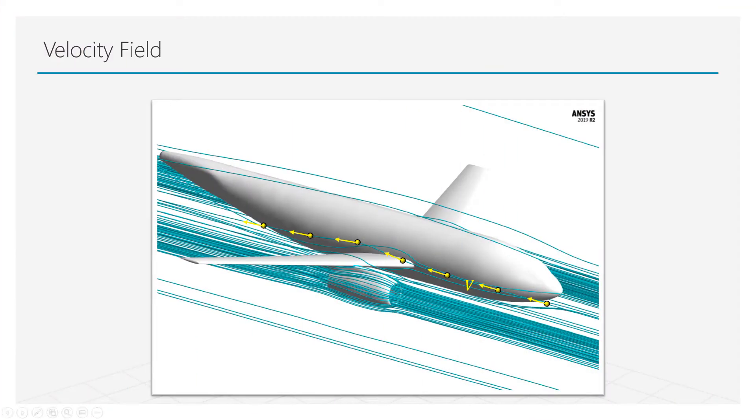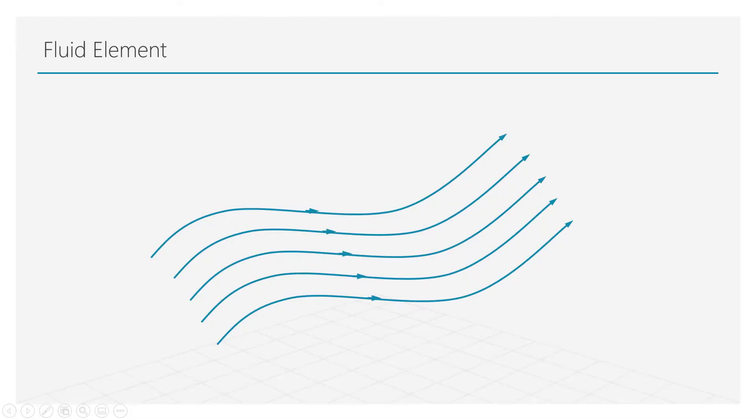Let us first start with the velocity field. Fluid velocity is a vector quantity which means it has both magnitude as well as direction. It can be described in the form of three components in the Cartesian coordinates. Fluid velocity can be a function of both space and time. The knowledge of this variable at each point in the space helps us describe the bulk motion of the fluid.